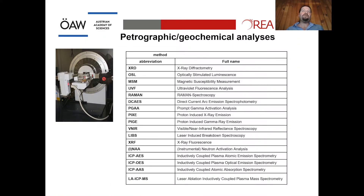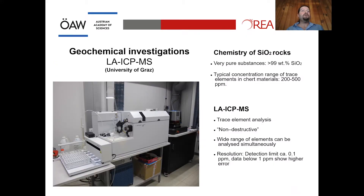A wide range of petrographic and geochemical methods has been employed for chert and flint provenance studies with varying success. The method we found most suitable for geochemical analysis of silicites is laser ablation ICP-MS. We use facilities available at the University of Graz. These rocks are very pure substances with trace element concentrations typically ranging between 2 and 500 ppm. Laser ablation ICP-MS allows non-destructive analysis, simultaneous measurement of a wide range of elements, and a very high resolution of approximately 0.1 ppm.